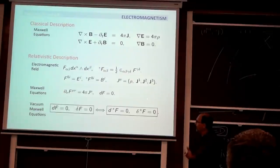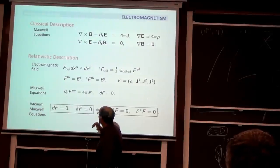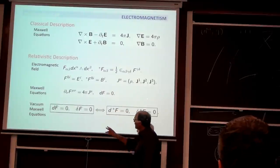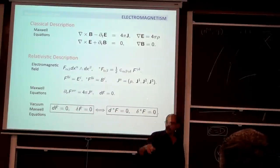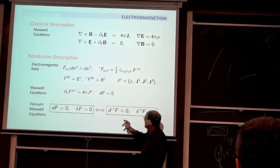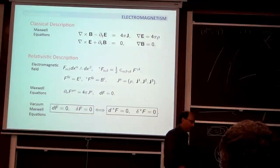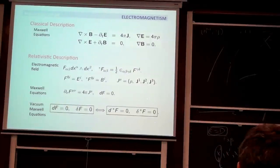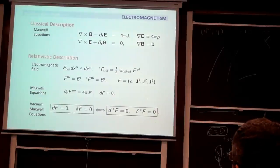Moreover, you see a fascinating duality symmetry. If you are in vacuum, with J equal to zero, the equations take the form: divergence of F equals zero and exterior derivative of F equals zero. If you dualize, this equation becomes that equation for the dual, and this equation becomes the other equation. This is a remarkable symmetry that would be very hard to see in the original notation. There are many other remarkable things in this spacetime formulation.